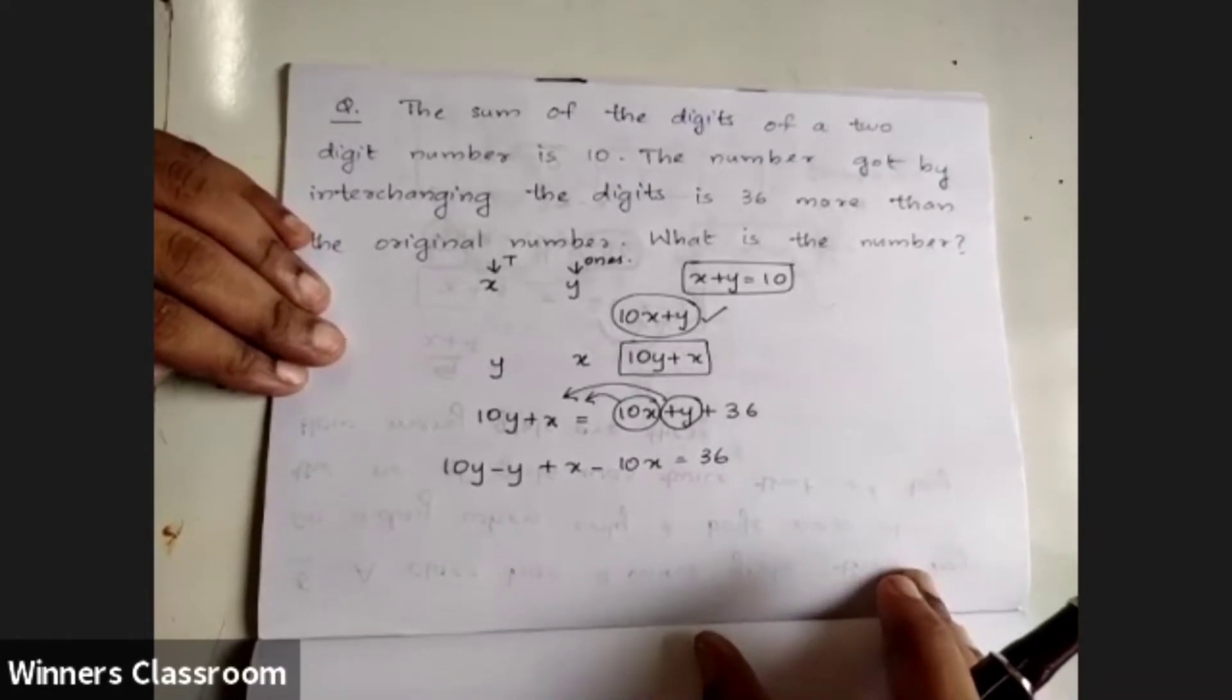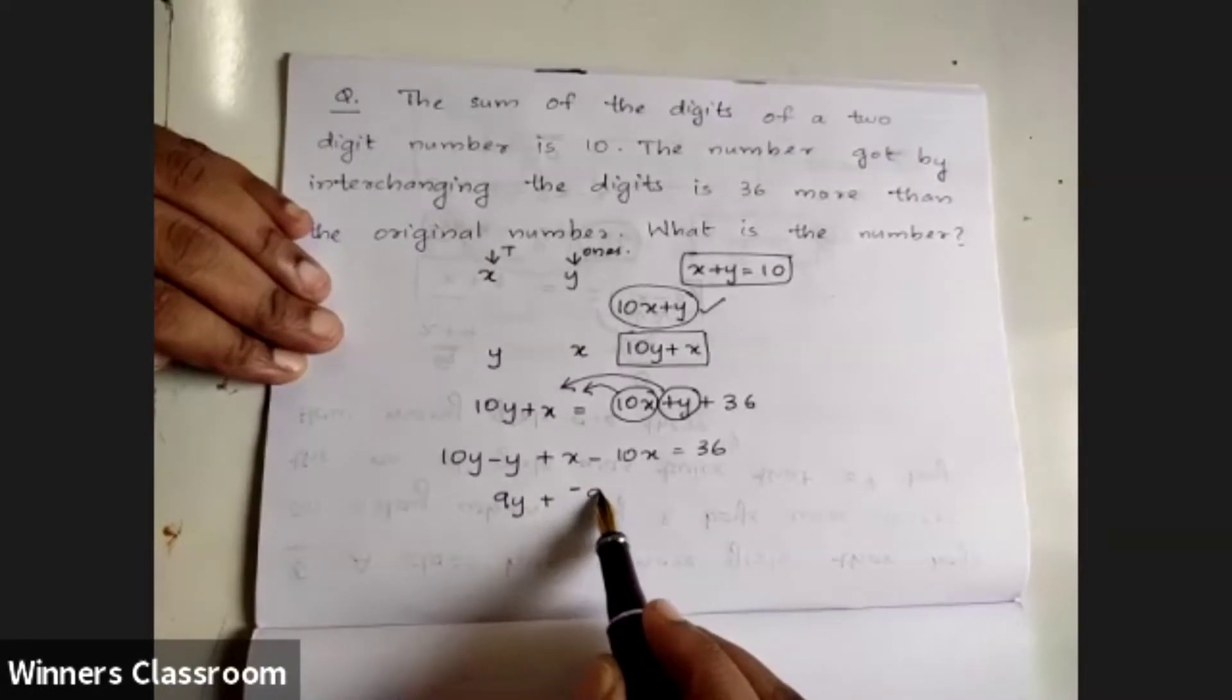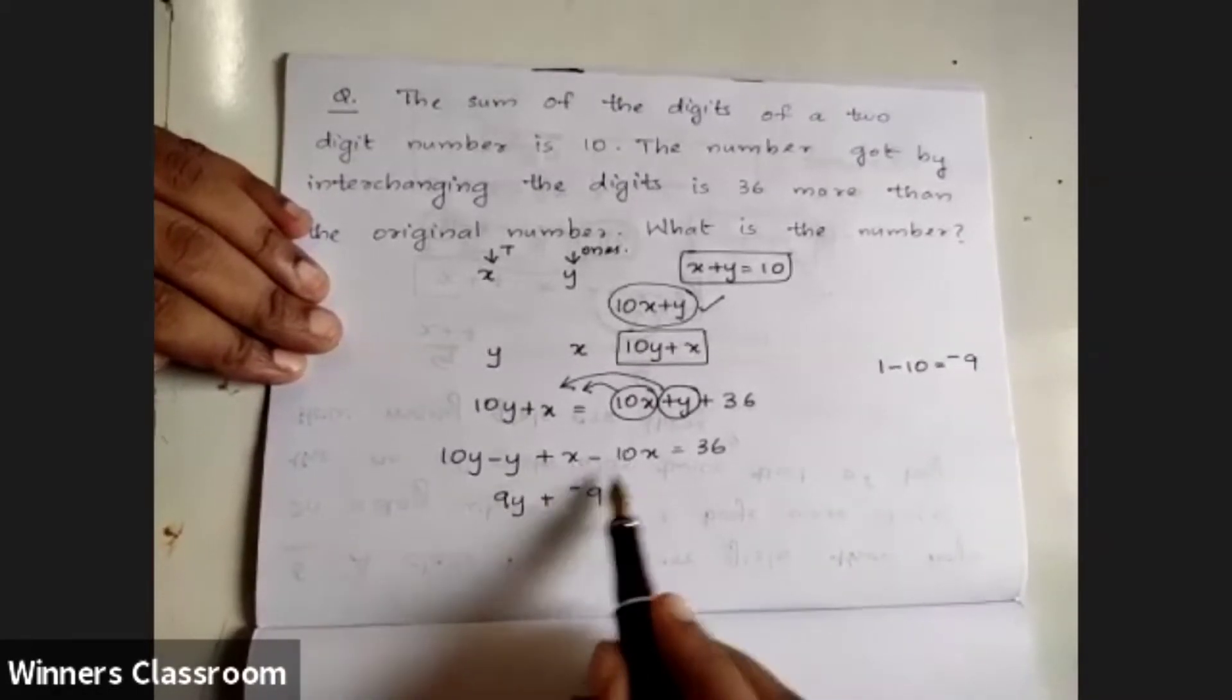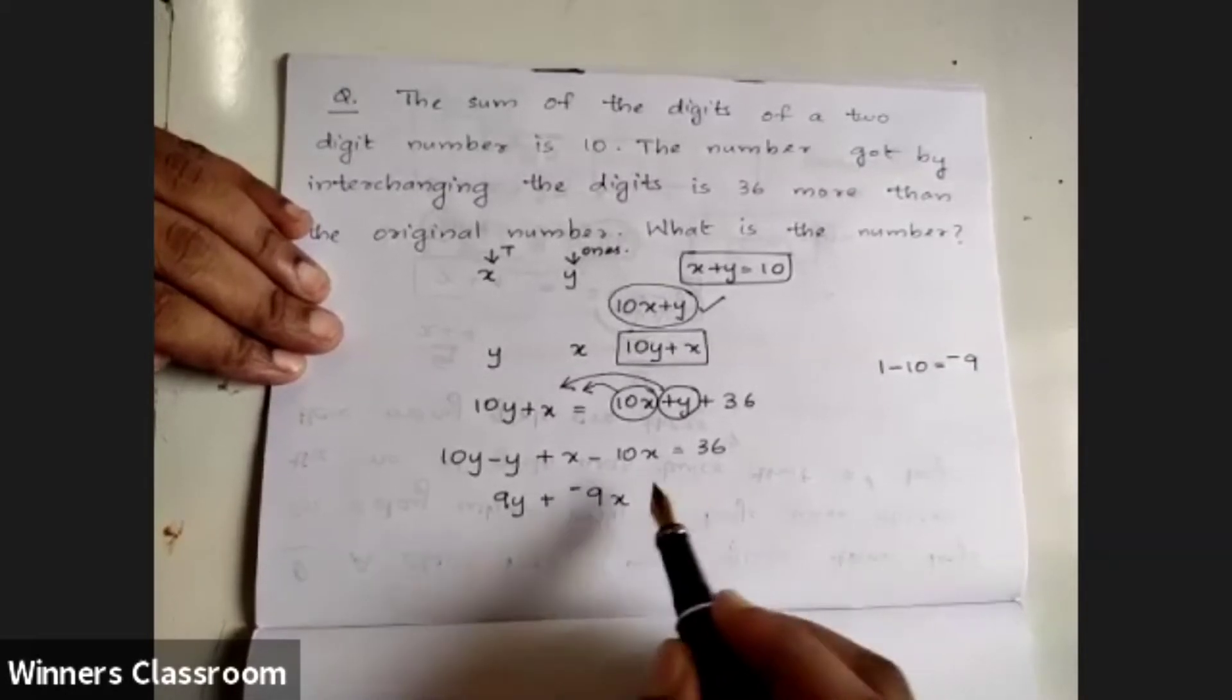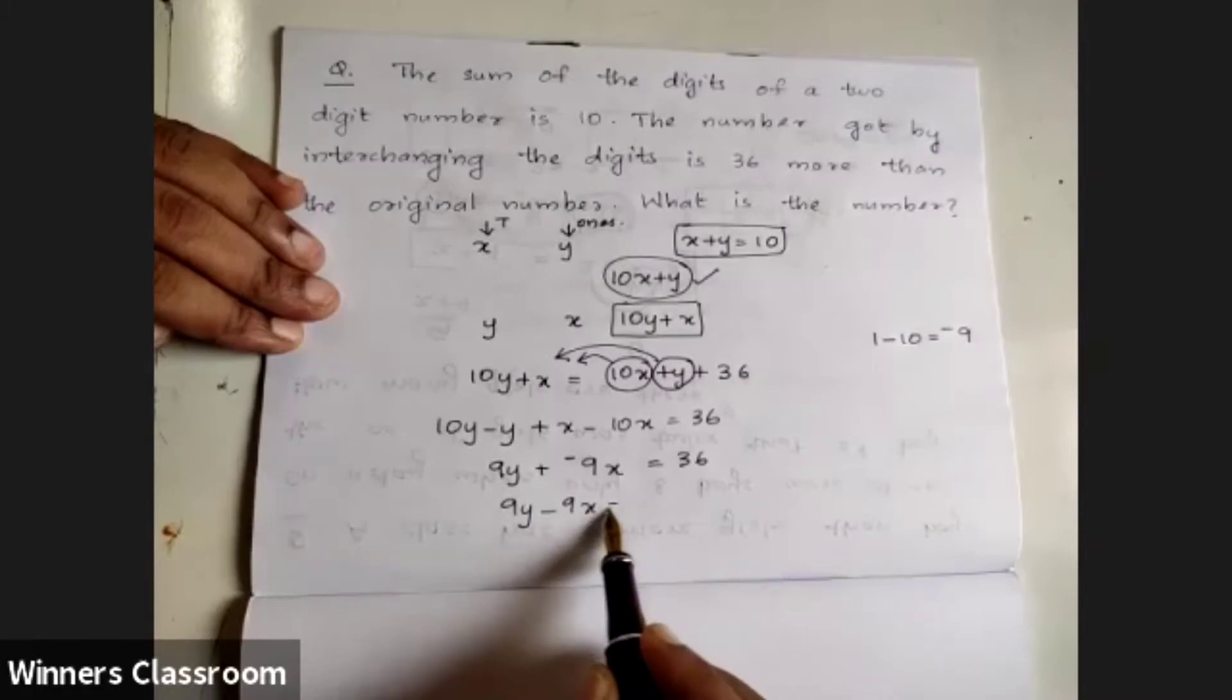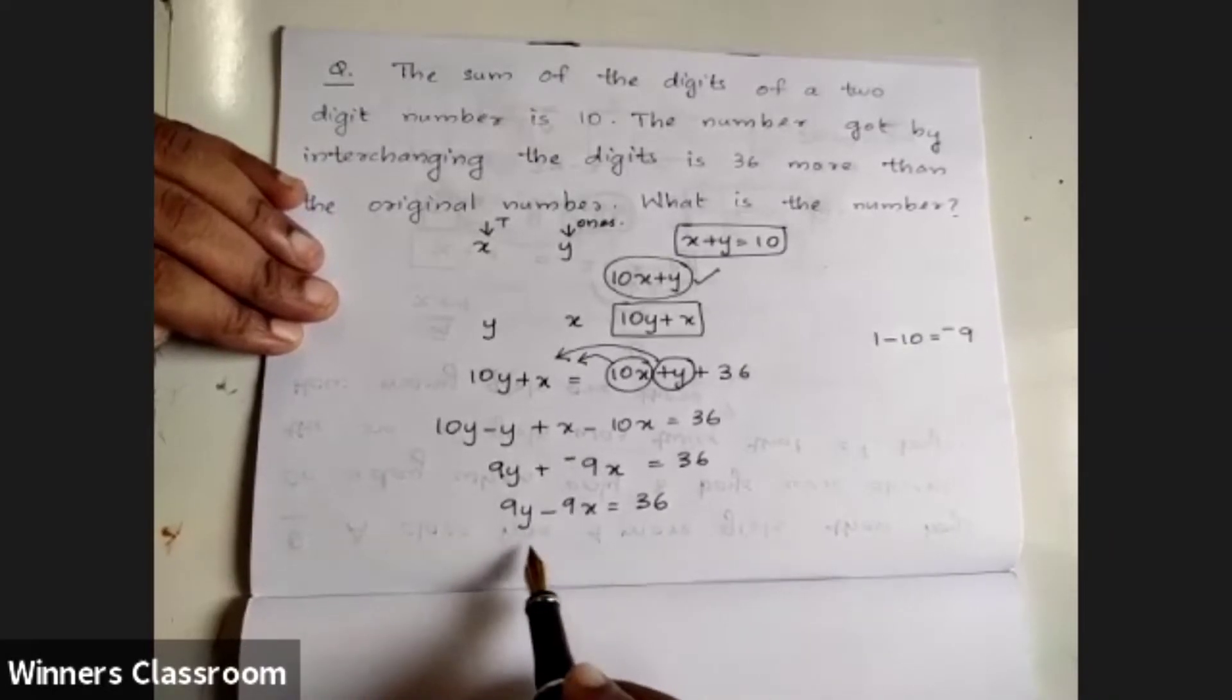Now 10y minus y is 9y, and x minus 10x is minus 9x. So 9y minus 9x equals 36. All these terms are divisible by 9, so I will divide each term by 9.